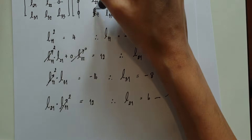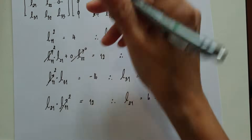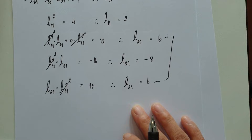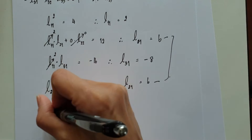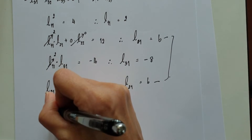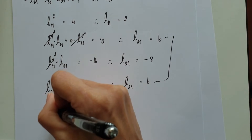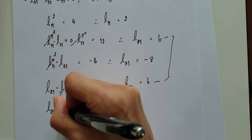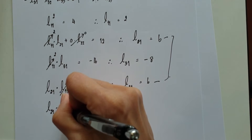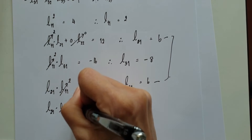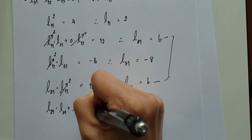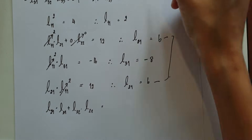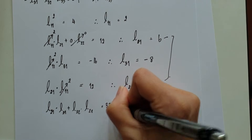Moving to the second row second column, we get L21 squared plus L22 squared equal to 37. Since L21 is 6, that gives 36 plus L22 squared equals 37, so L22 equals 1.